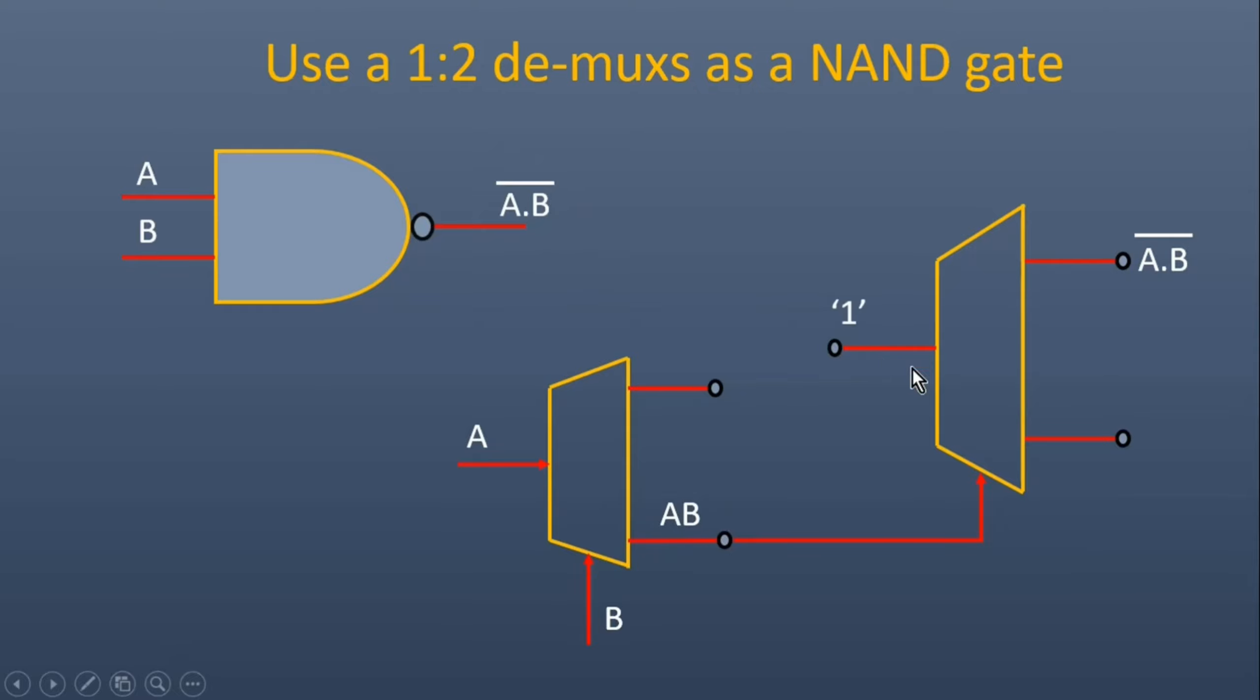In the first question, I told you how we can convert a 1:2 demultiplexer into a NOT gate. For that, we need to apply this AB at the select line and fix input I at logic one. The Y0 output of the second multiplexer will become A dot B bar, which is the output of a NAND gate.